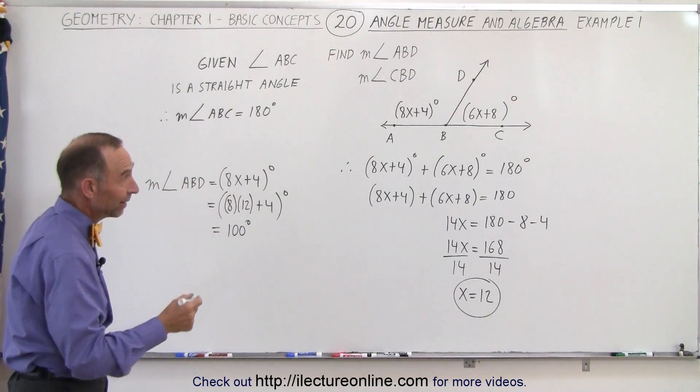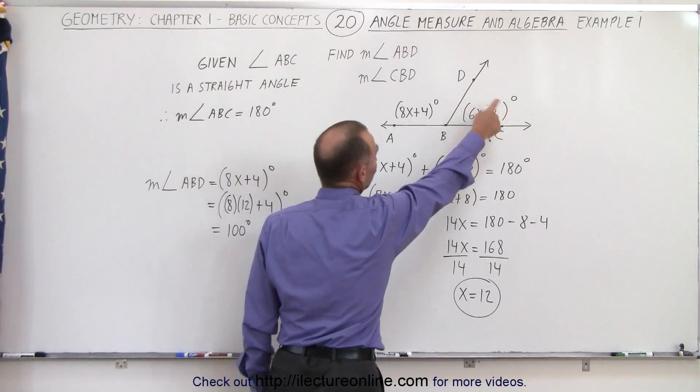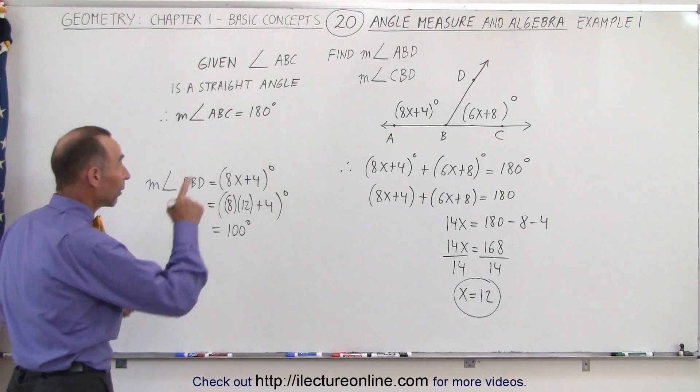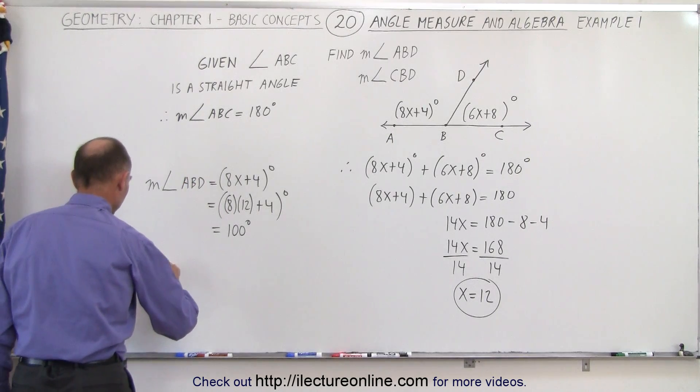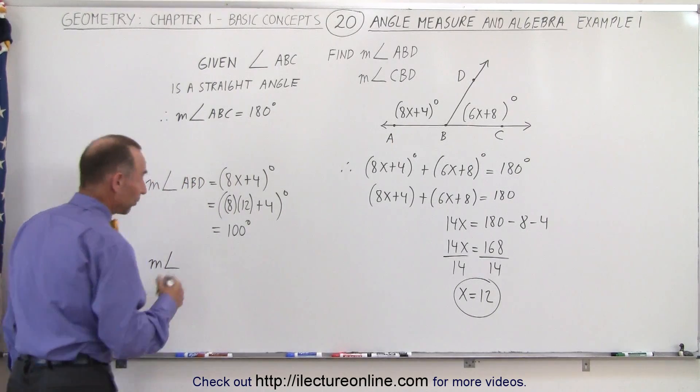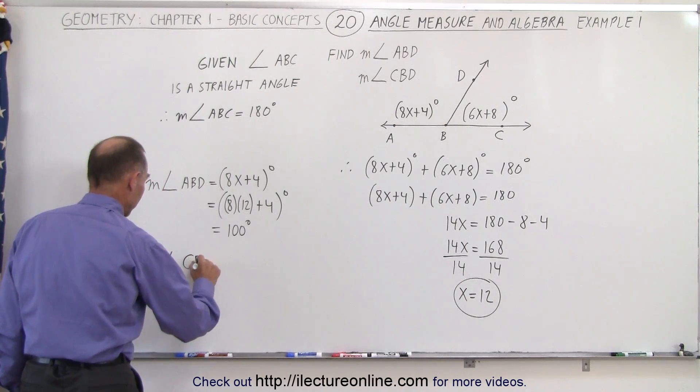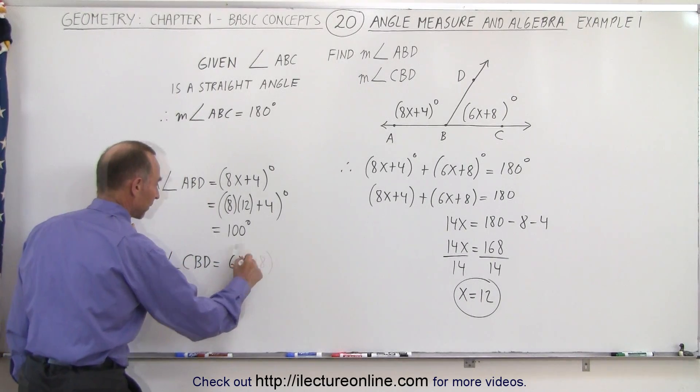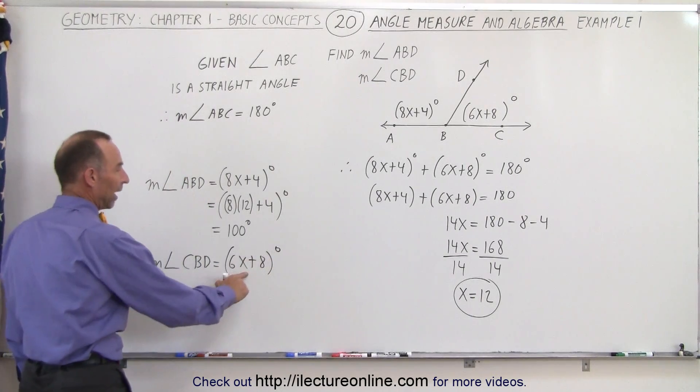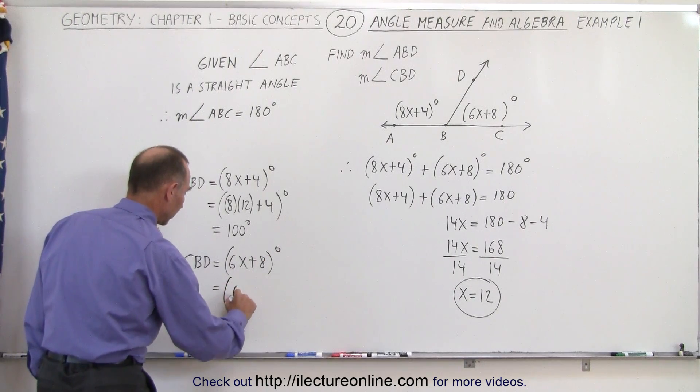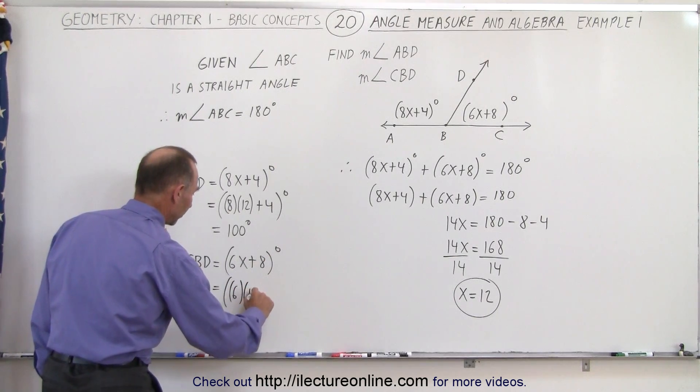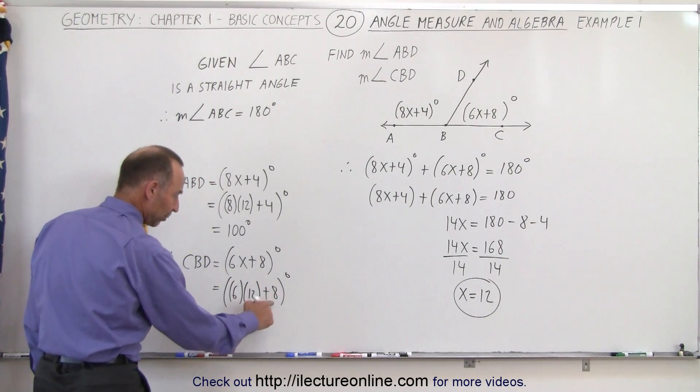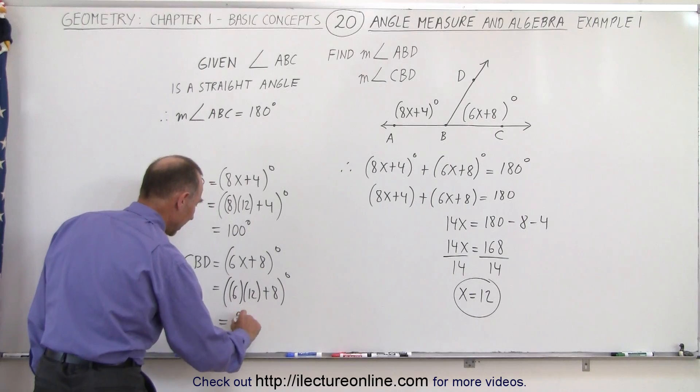Now for the right side, realizing that since this is a straight angle this should be 80 degrees, but let's make sure. The angle CBD is equal to 6x plus 8 degrees. Since x is equal to 12, that would be 6 times 12 plus 8 degrees. 6 times 12 is 72 plus 8 is indeed 80 degrees.